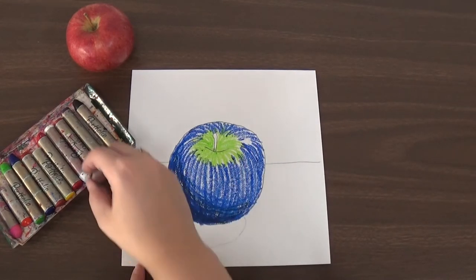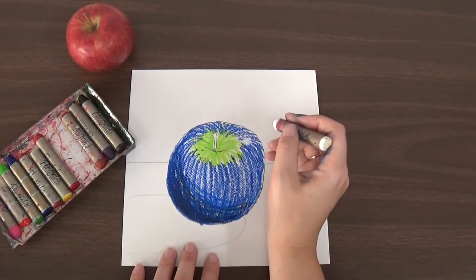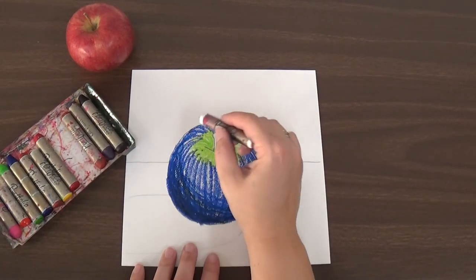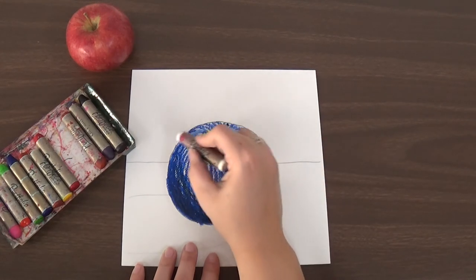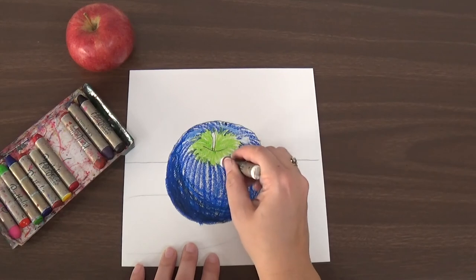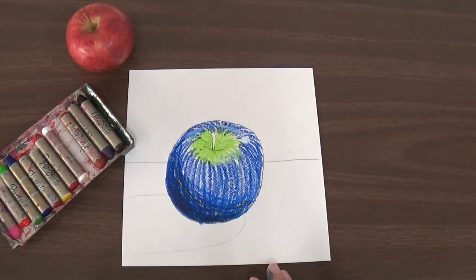And then I am going to put in my white highlight. And just like on our last one we can add a little white to the spots where the light would shine down because my light is coming from over here. So I would have some white along these parts here. And then I have this beautiful apple.